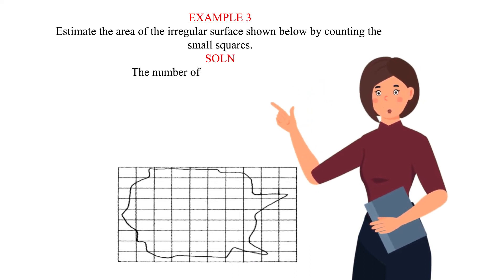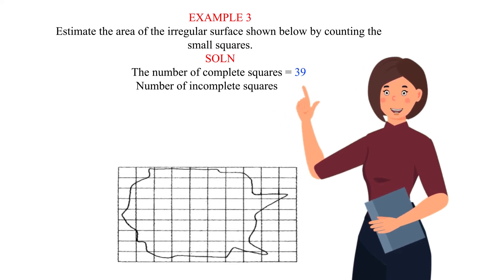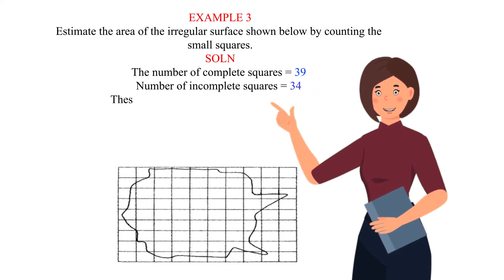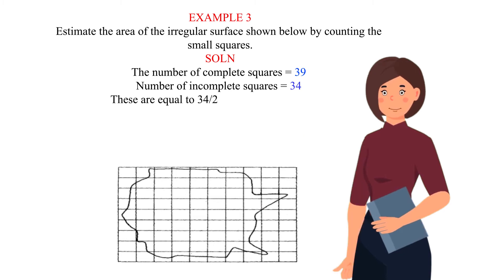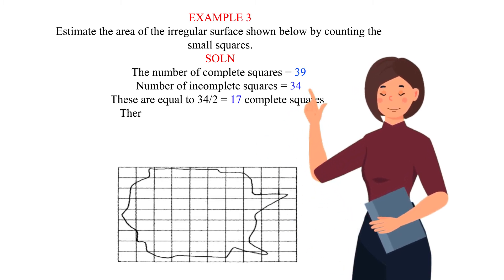The number of complete squares equals 39. The number of incomplete squares equals 34, which is equal to 34 divided by 2, equals 17 complete squares.